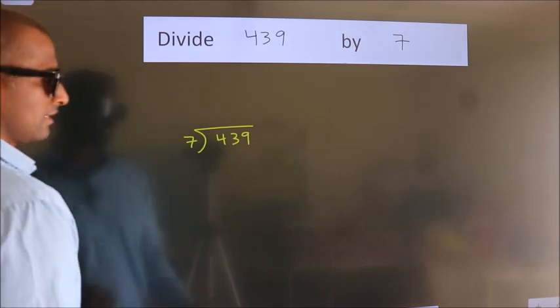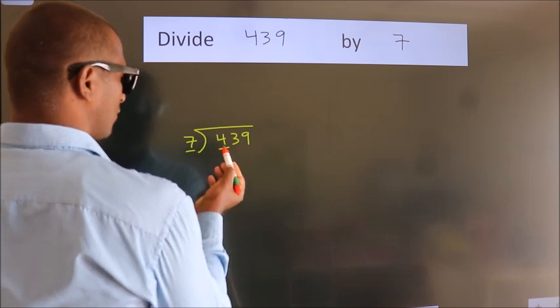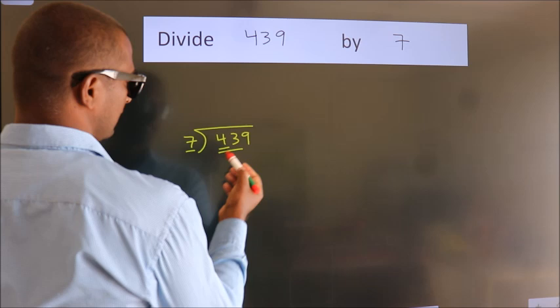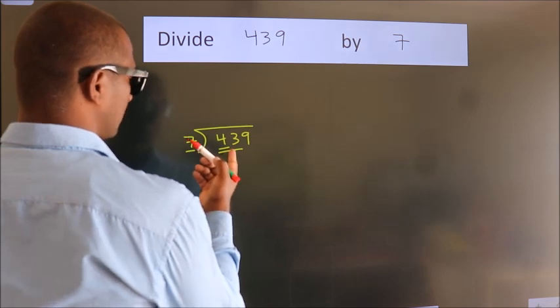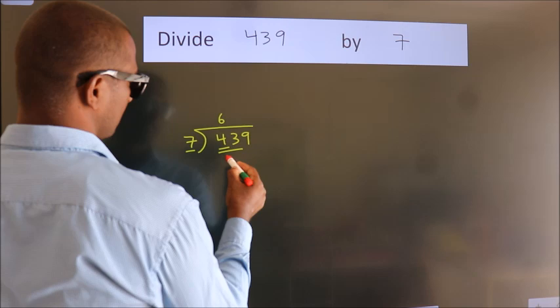Next, here we have 4, here 7. 4 is smaller than 7, so we should take 2 numbers: 43. A number close to 43 in the 7 table is 7 times 6, which is 42.